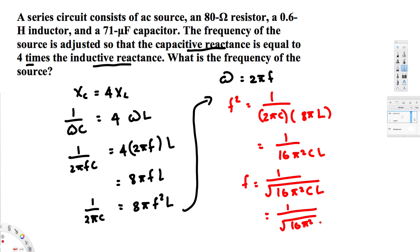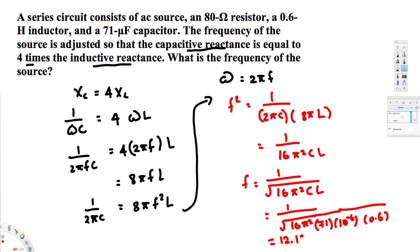That gives us 1 / (4π · √(CL)). The capacitance is 71 microfarads = 71×10⁻⁶ F, and the inductance is 0.6 H. Plugging these into the calculator gives a final value of 12.19 Hz. That's the final answer. I hope this helps — thanks for watching.